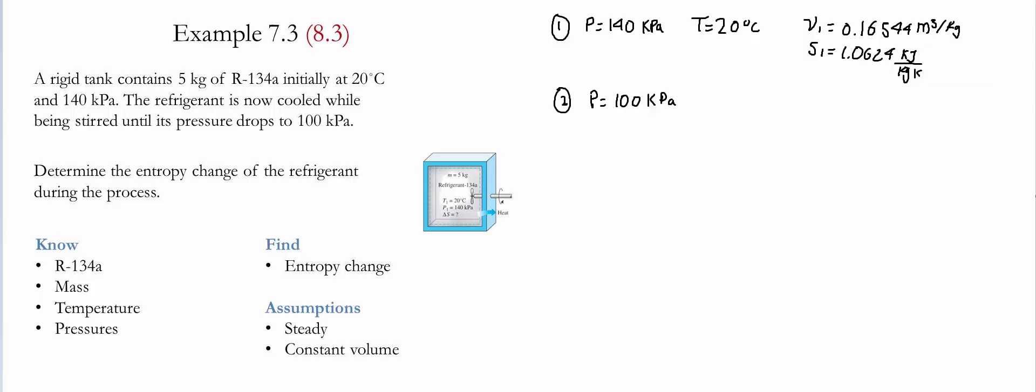For the second state we know the pressure dropped to 100 kilopascals. The other quantity we know is that because this is a constant volume or rigid tank, the final specific volume equals the initial specific volume, which is 0.16544 meter cubed per kilogram.